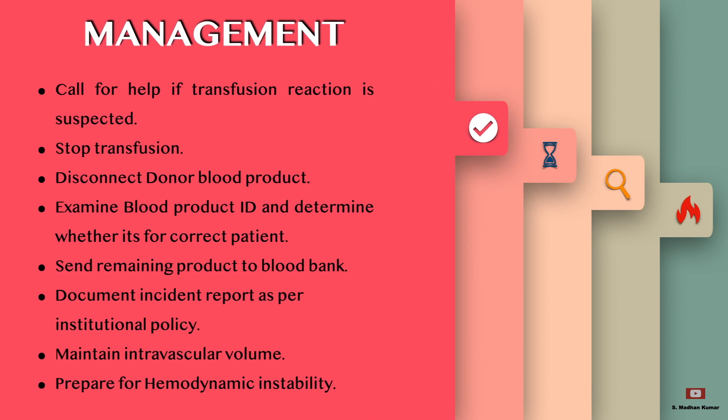How do we manage the transfusion reaction? First of all, call for help if transfusion reaction is suspected. Stop the transfusion, disconnect the donor blood product, examine the blood product ID and grouping, and determine whether it is for the correct patient. Send the remaining blood product to the blood bank. Document an incident report as per your institutional policy.